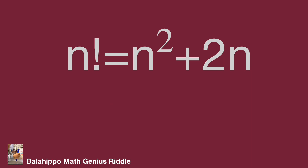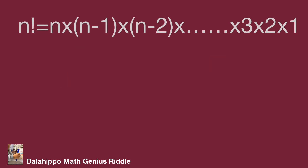The question is n factorial equal to n squared plus 2n. Firstly, let's talk about n factorial. What is factorial? n factorial equals n times (n minus 1) times (n minus 2) dot dot dot times 3 times 2 times 1. For example: